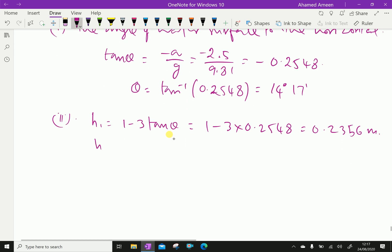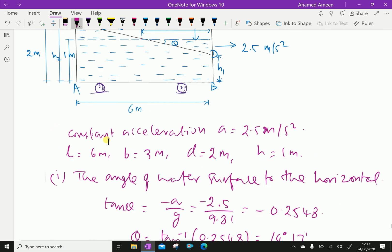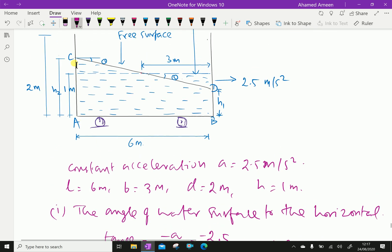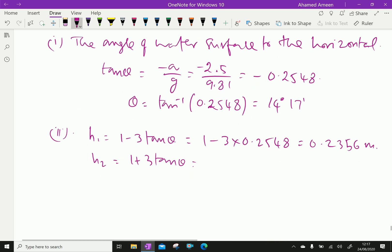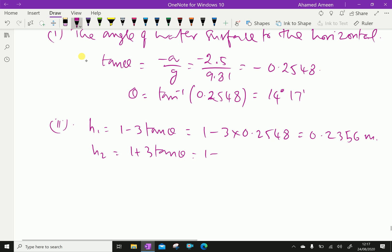H2 is similarly 1 plus 3 tan theta on this side. H2 equals 1 plus 3 into 0.2548, which gives 1.7644 meters.